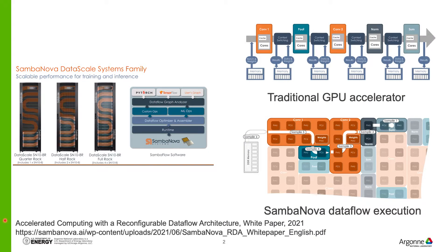A high-level overview of SambaNova software flow architecture is shown here. From the user perspective, the user writes the code of the neural network in PyTorch or TensorFlow. The data flow analyzer analyzes this graph, and the data flow optimizer and assembler looks at various types of custom operations and machine learning specific operations and maps them on the AI hardware.